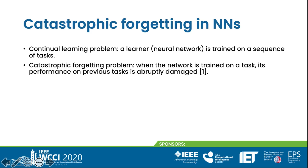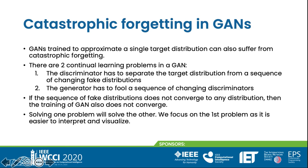In this paper, we discovered that GANs trained to approximate a single target distribution can also suffer from the catastrophic forgetting problem. Traditionally, the training process of GANs is considered as a single task. However, because of the fake distribution change during training, the task of separating the fake distribution from the real distribution also changes.